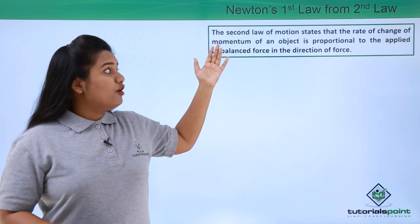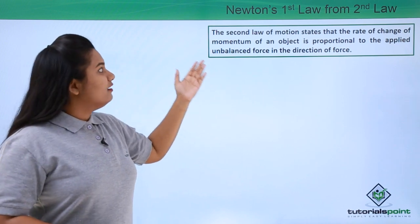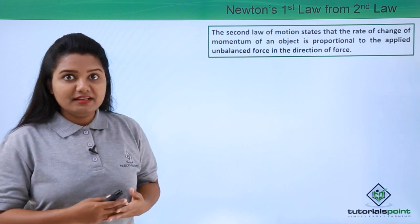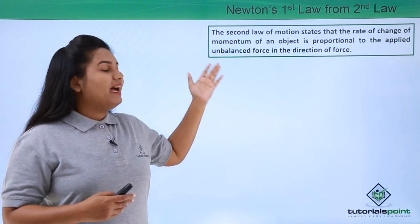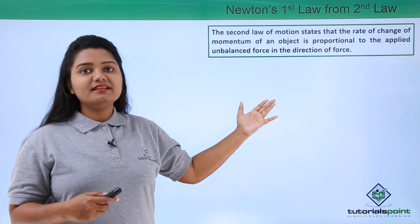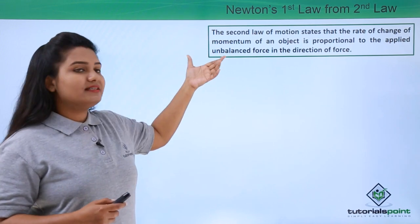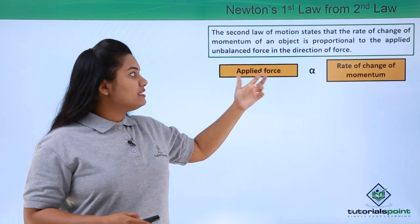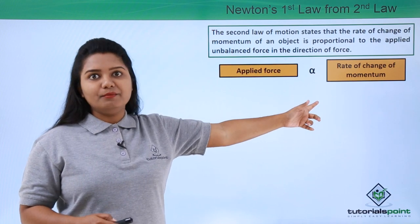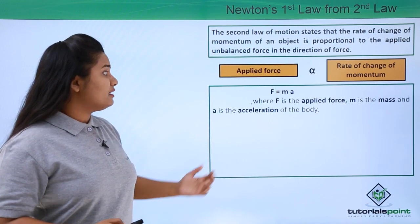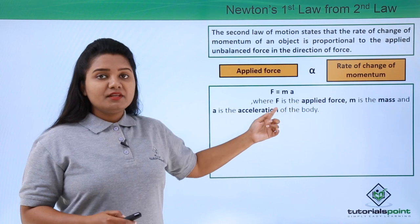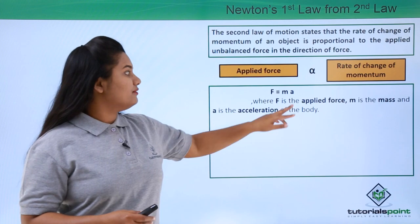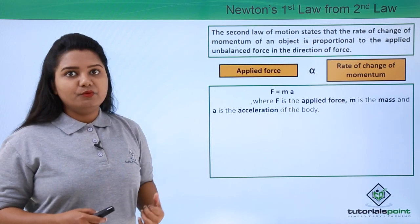The second law of motion states that the rate of change of momentum of a body is directly proportional to the applied unbalanced force in the direction of force. So the applied force is directly proportional to the rate of change of momentum, and we have also arrived at the formula F equals m into a, where F is the force applied, m is the mass of the body, and a is the acceleration of the body.